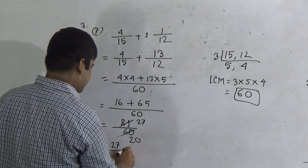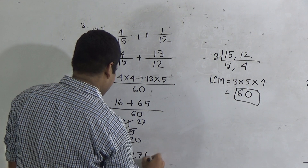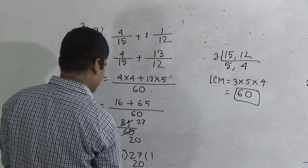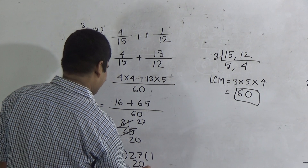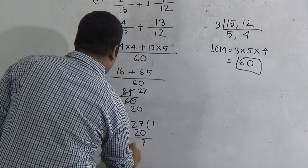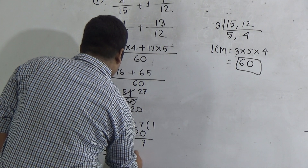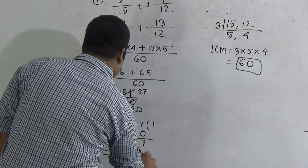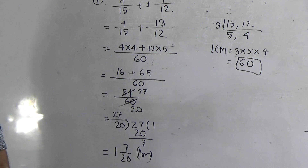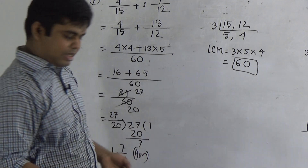Now we divide 27 by 20. In 27, 20 goes 1 time — 20 ones are 20. We subtract and get 7. So the mixed fraction is 1 and 7/20. This is the answer of this question. I hope you have understood. Next, we shall solve question number 11.